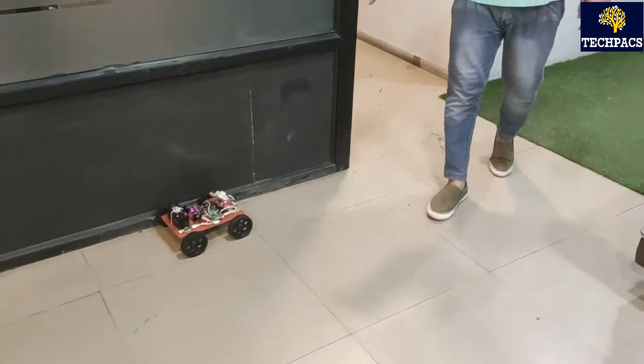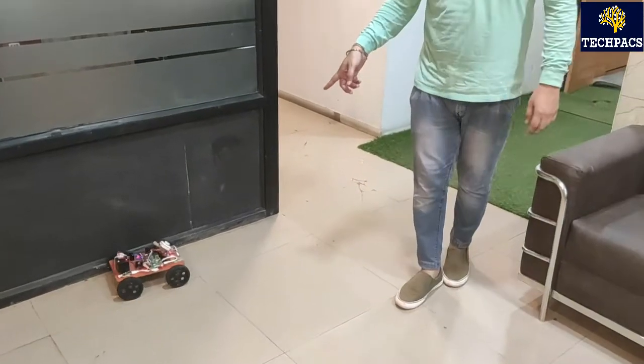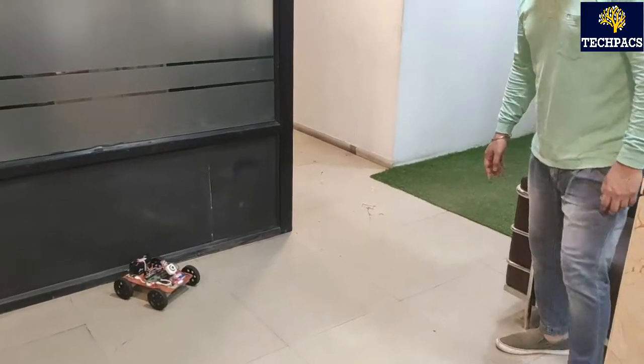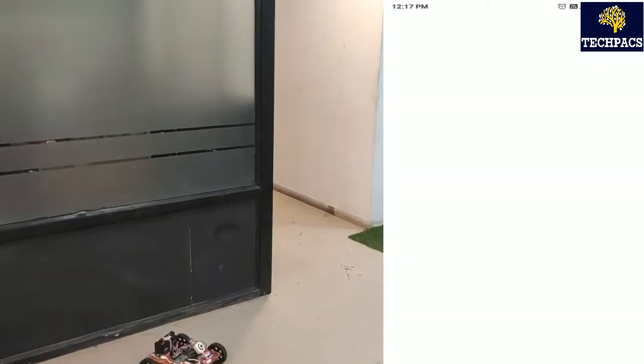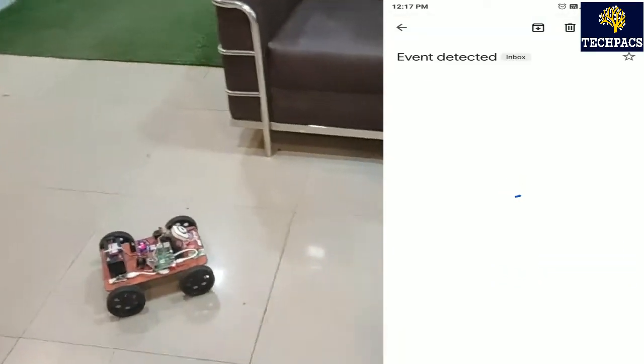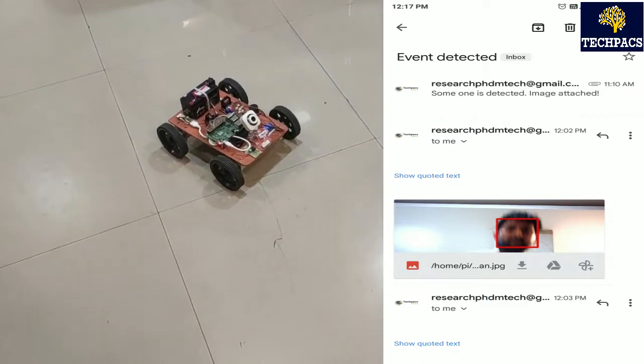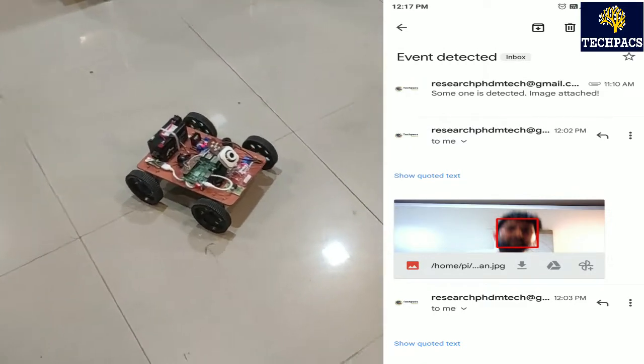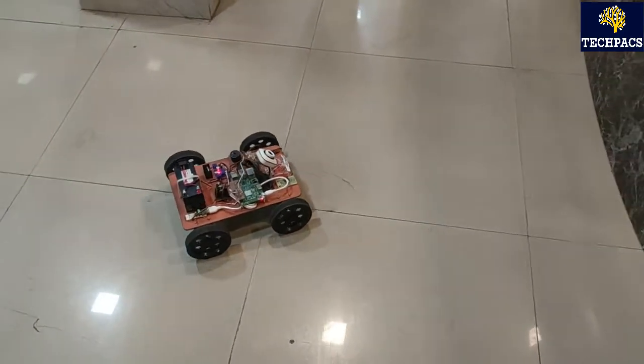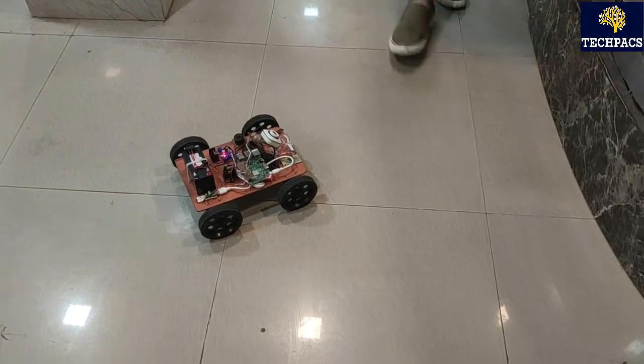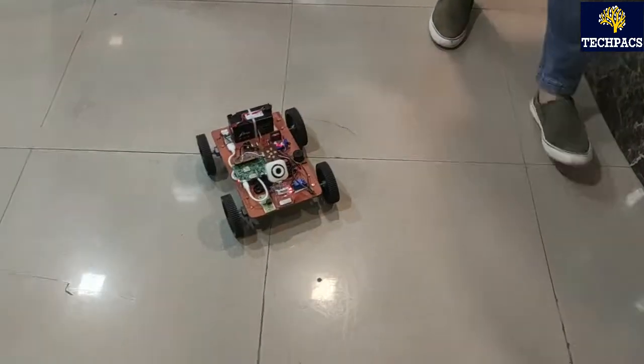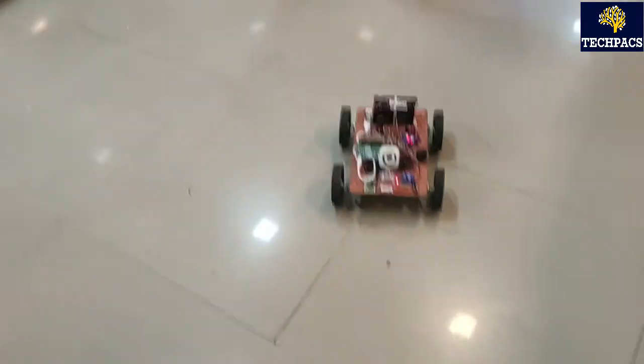You can see it has beeped, so the person is detected. Again I am moving in front of it. It's continuously detecting and sending the email. I'm going out of the frame now, so it's not detecting any person. The particular image is also going to be sent to the concerned person.